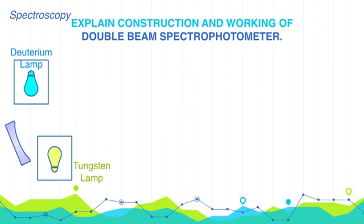Nernst Glower is metallic oxide of yttrium, erbium, and zirconium. IR radiations can also be obtained by heating glow bar, which is silicon carbide or carborundum, at the temperature of 1300 to 1700 degrees Celsius.